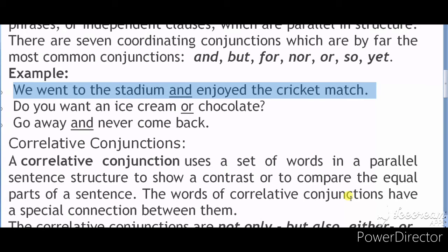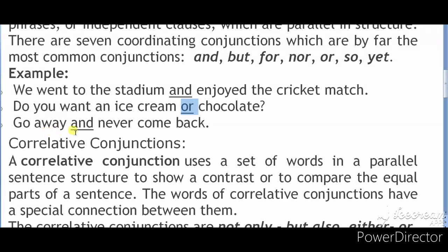Here the coordinating conjunction is 'or'. Another example: 'Go away and never come back.' Here 'and' is the coordinating conjunction.